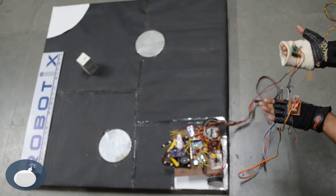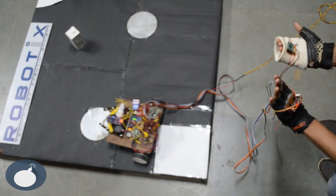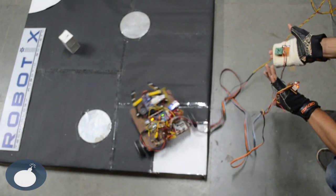So this is the video of the robot in action. As you can see, it has detected the mine using the metal detection module in the front.